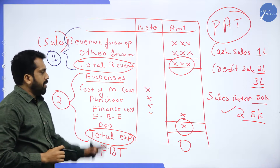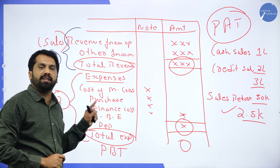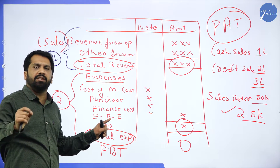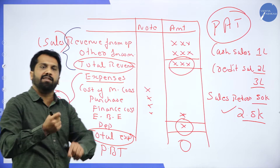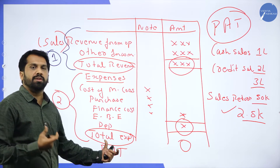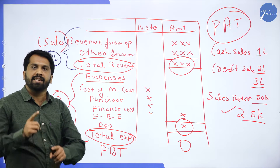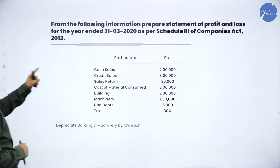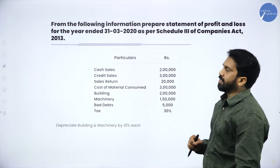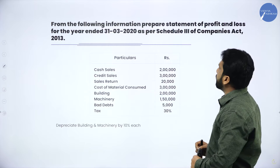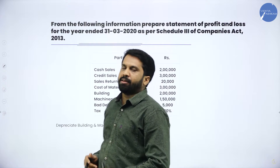Hope you understood. We already did two problems and I am revising again because this is very important — you can easily score 6 marks. If you work on this again and again it becomes familiar and easy to write with no confusion. Now we will go for one problem: from the following information, prepare the Statement of Profit and Loss for the year 31st March 2020 as per Schedule 3 of Companies Act 2013.